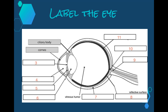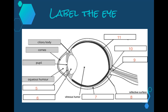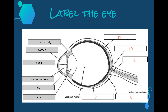Number two is the cornea, which is the clear covering on the outside of the eye. Number three is the pupil. Number four is the aqueous humor, which is the fluid found between the cornea and the lens. Number five is the iris, which is the colored part of our eye. Number six is the lens, which is one of the most important parts of our eye. The vitreous humor is already labeled — that's all the fluid that makes up the rest of the eye.